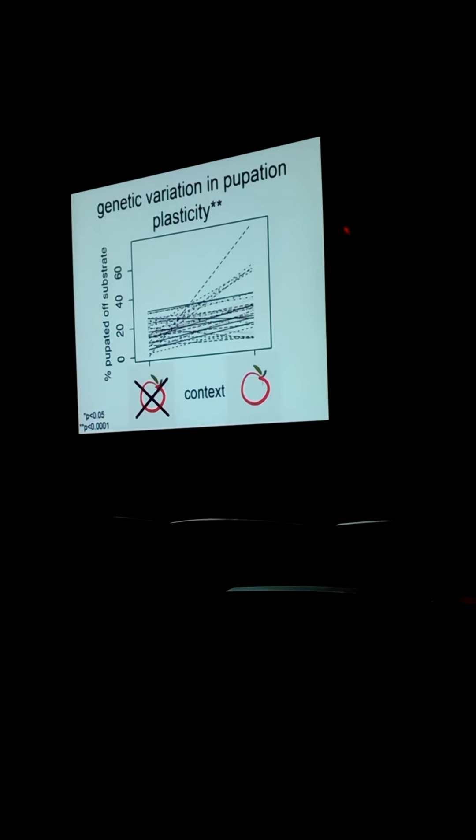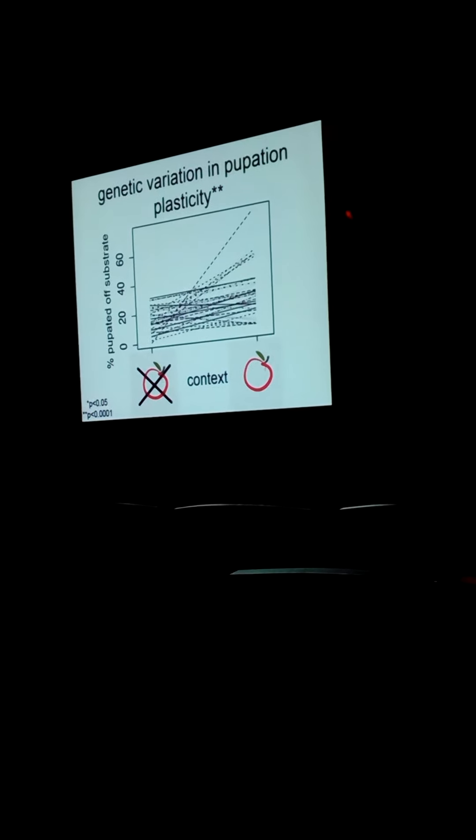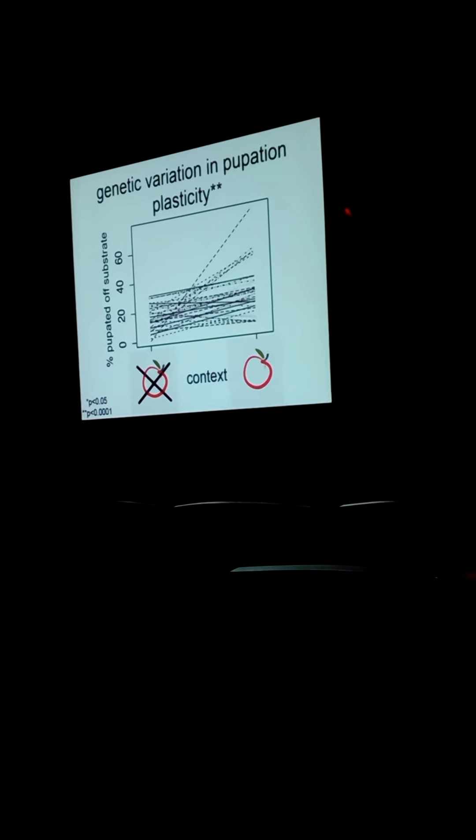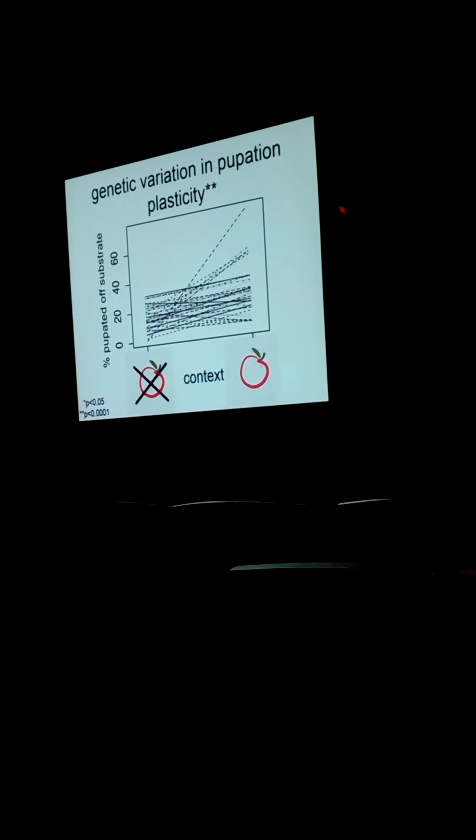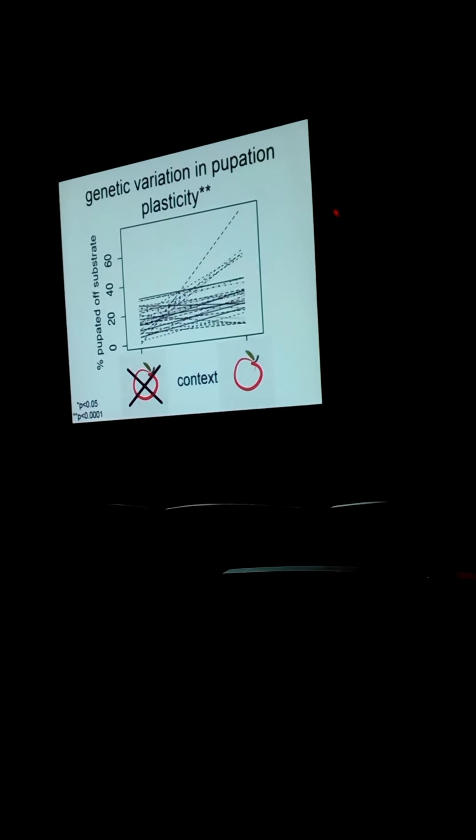Here the y-axis is the proportion of individuals who crawl away from the food to pupate in these two contexts. Each of these lines represents the average of a single genotype measured at least three times in each context, where one replicate was 25 larvae. You can see that some genotypes make dramatically different decisions about where to pupate in the two different contexts, representing highly plastic genotypes, whereas other genotypes do pretty much the same thing no matter what context they're in, representing relatively low plasticity genotypes.